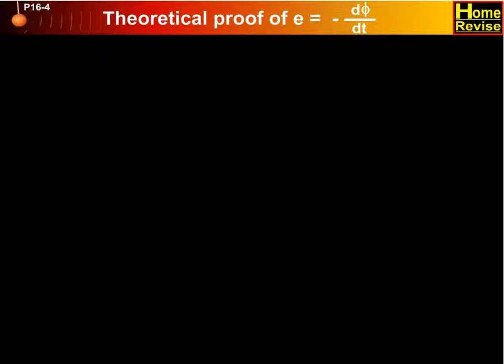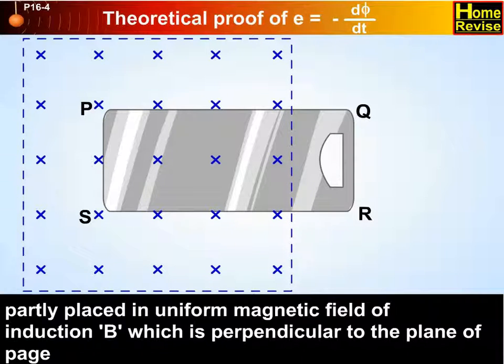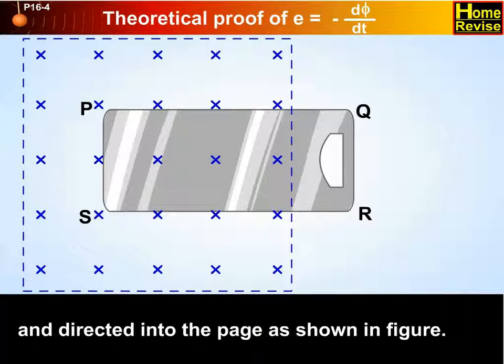Now let us see the theoretical proof of e equals minus d phi upon dt. Consider a rectangular loop of conducting wire PQRS partly placed in a uniform magnetic field of induction B which is perpendicular to the plane of the page and directed into the page as shown over here.